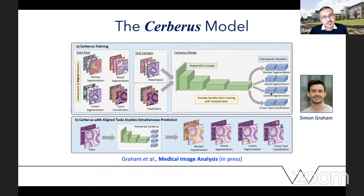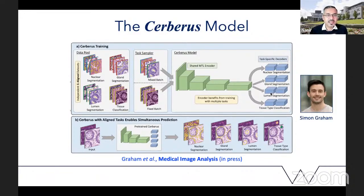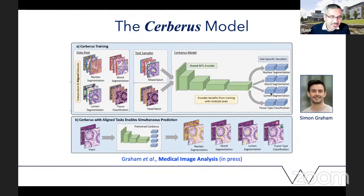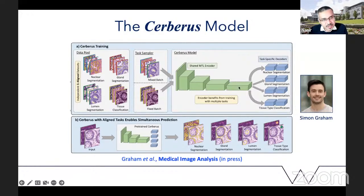We brought together the segmentation and classification of different types of nuclei, as well as segmentation of glands and lumen, and classification of various different tissue types — all of them in one model that we call the Cerberus model. It's a multi-headed kind of model that does all of these different tasks using a single backbone network.